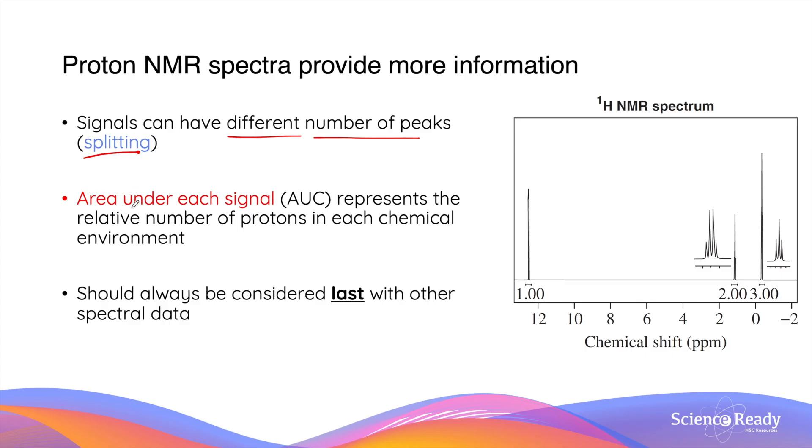The second piece of information that's present in a proton NMR is the area under each signal, or area under the curve, AUC for short. This represents the relative number of protons in each chemical environment.